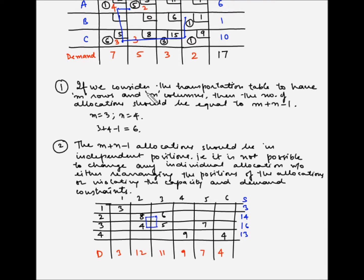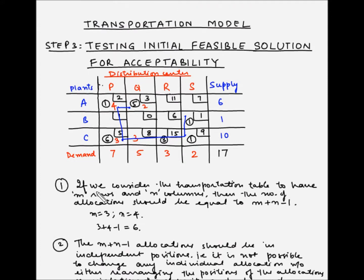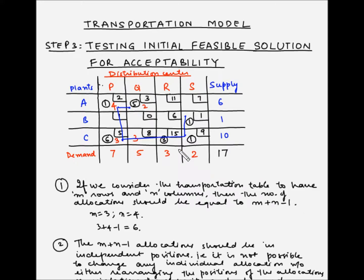If both conditions are met, we can proceed to step 4, which is to test the initial feasible solution for optimality. Remember, this step is not a test for optimality itself — it is to verify that the initial feasible solution is acceptable to perform an optimality test on it.